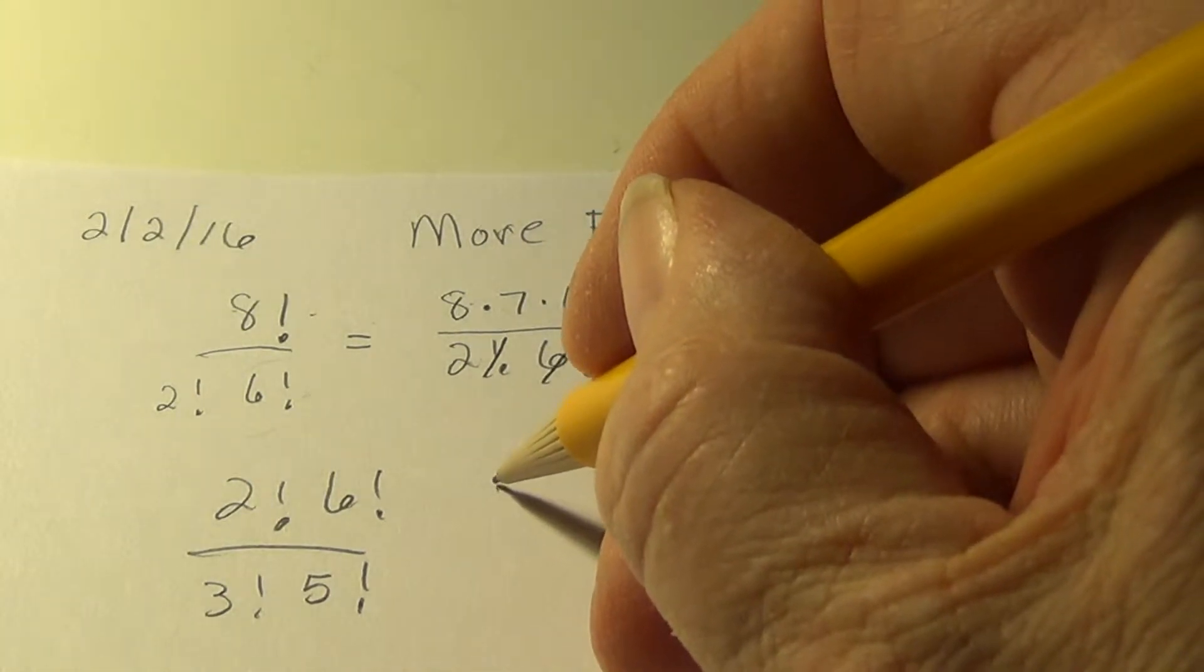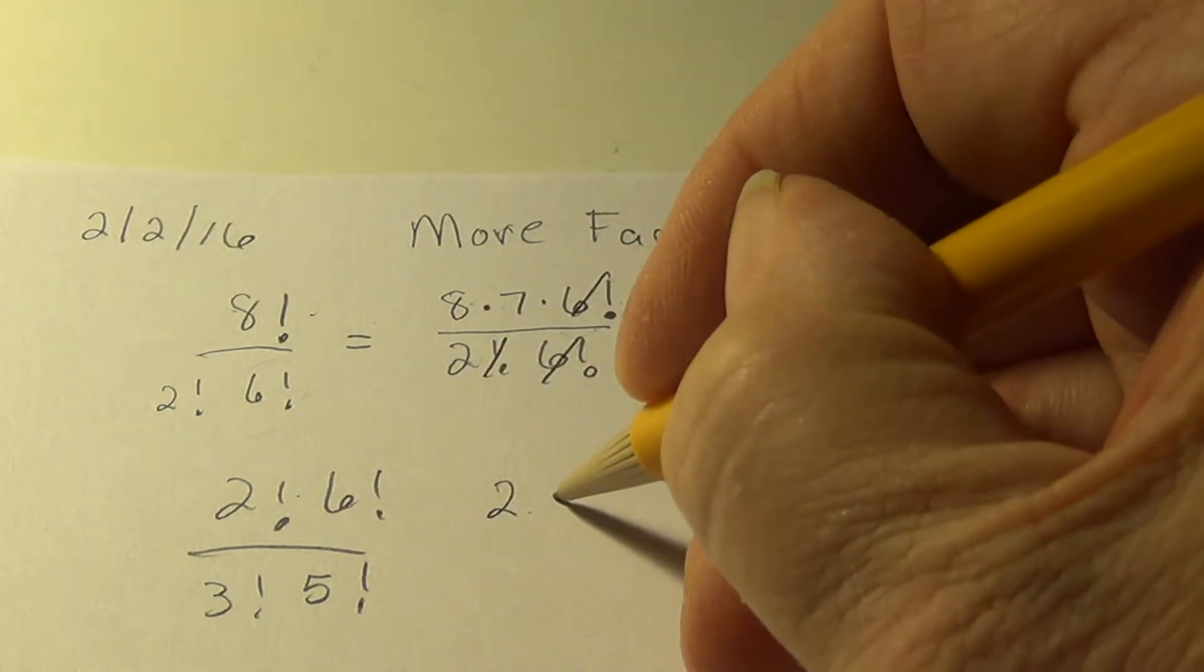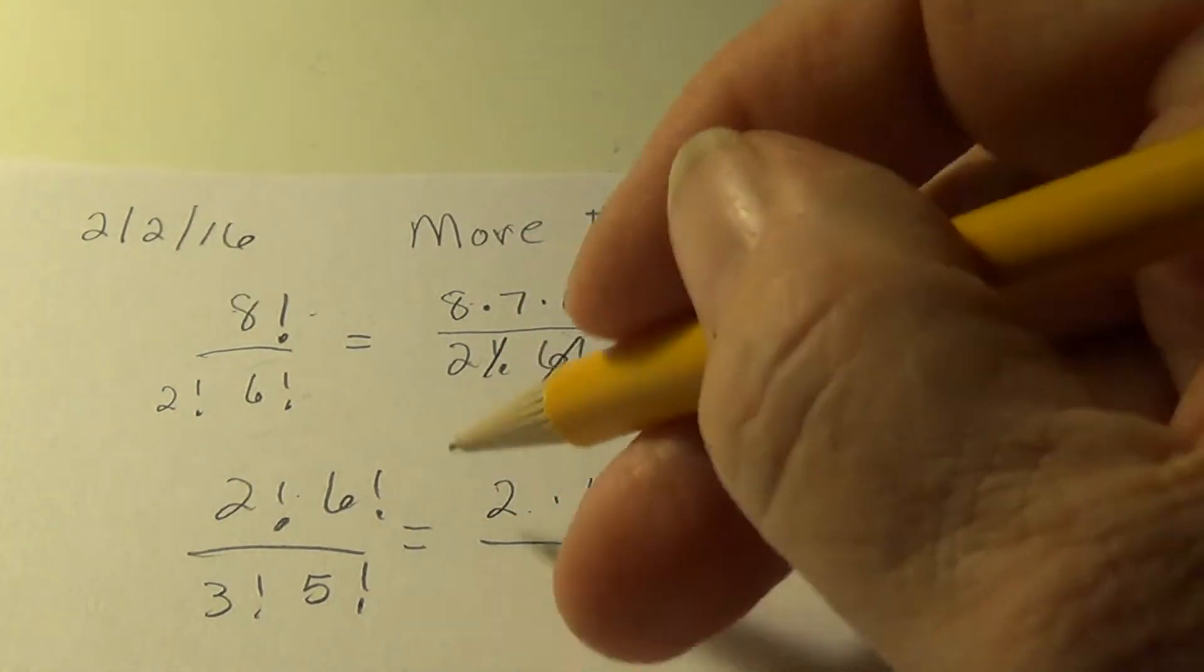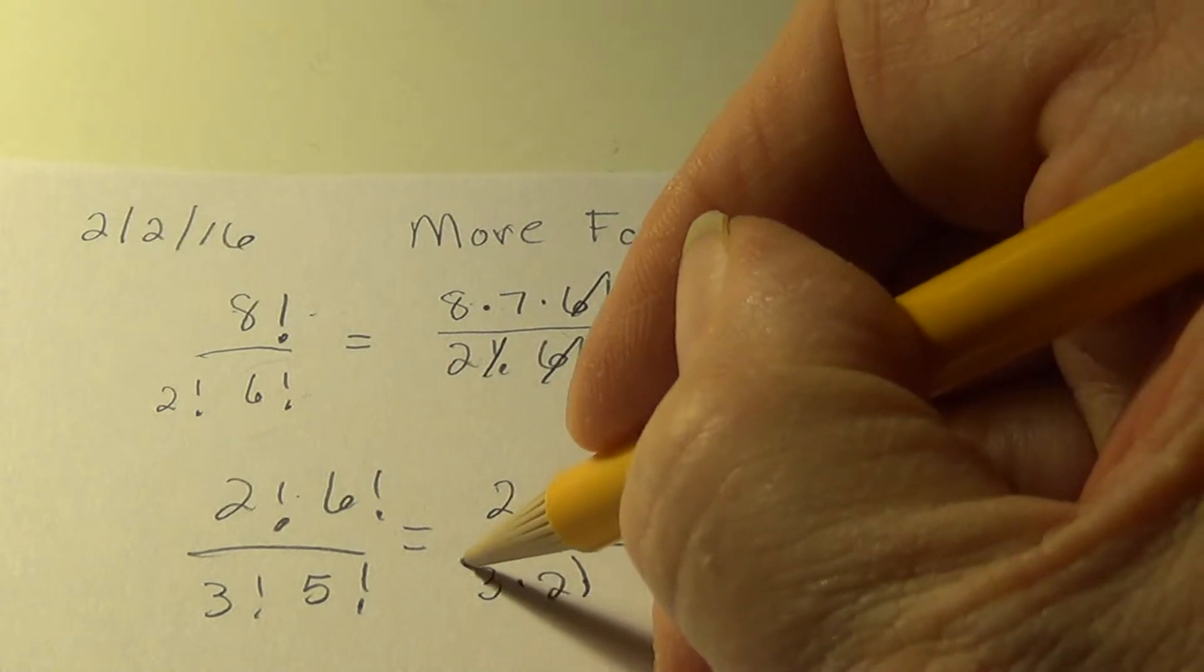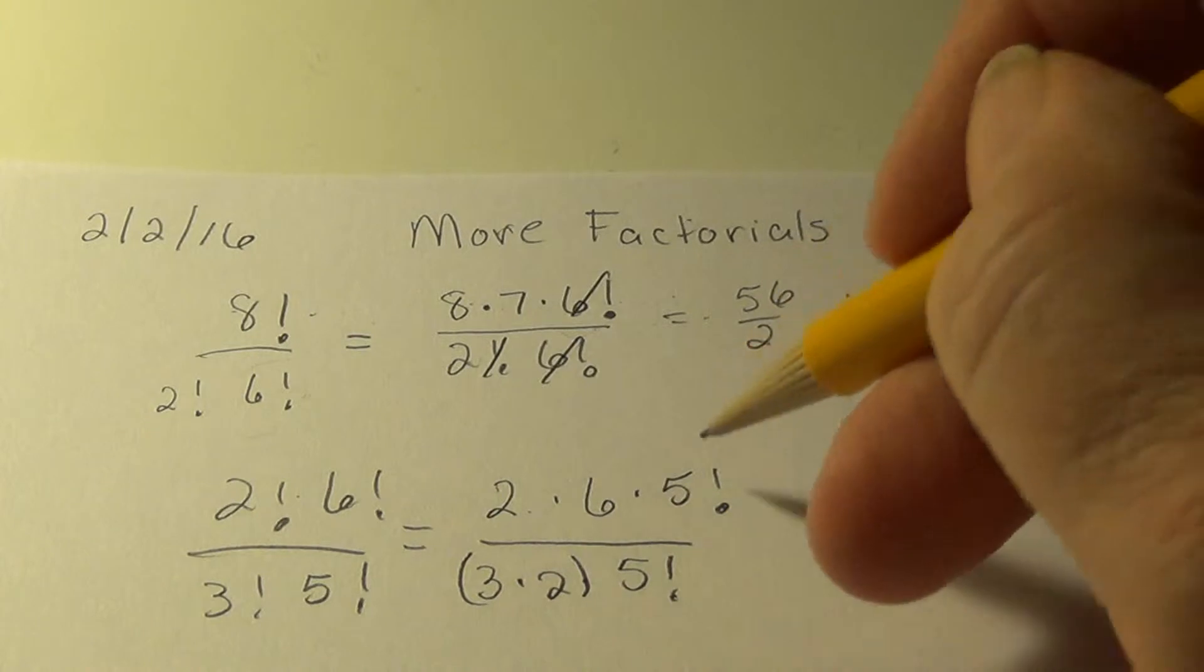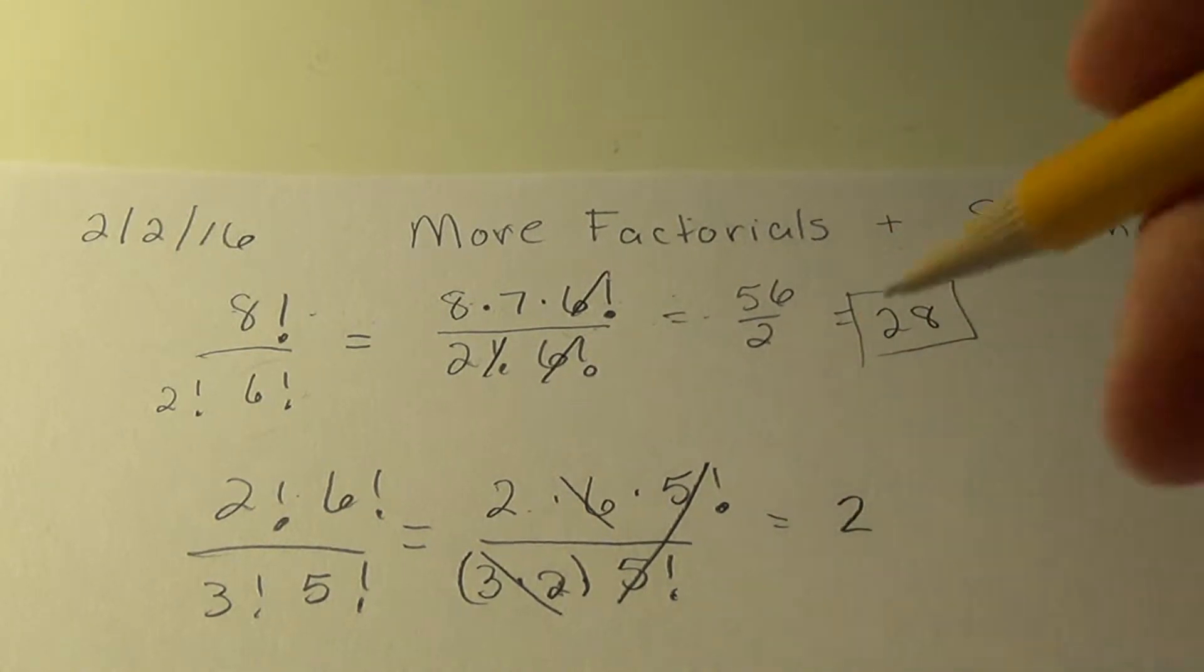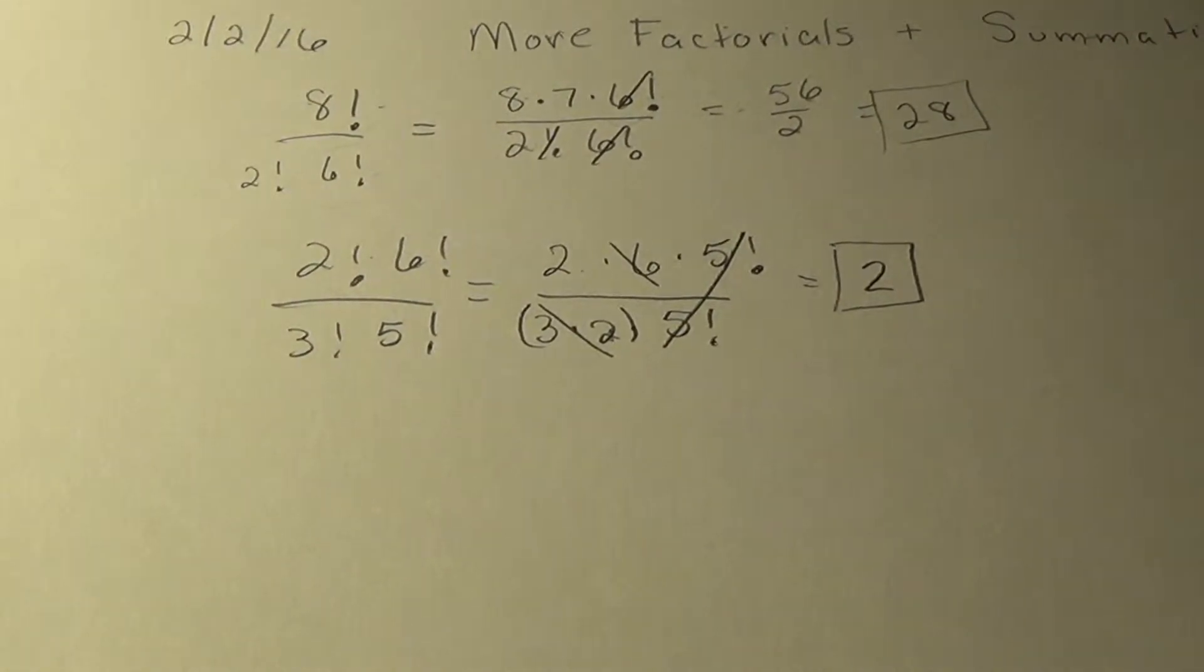Hopefully you're working ahead of me. So I'm going to go 2, because 2 factorial is 2, times 6 times 5 factorial. So now I'm going to go 3 times 2, times 1. I don't have to write the times 1, and I have a 5 factorial. These cancel. 3 times 2 is 6, so that will cancel. And I get a 2. So hopefully you beat me to the 2.